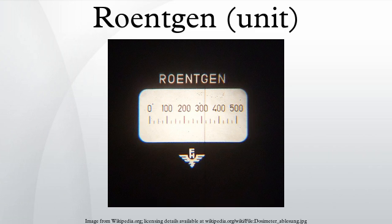In 1950, the ICRP reduced their recommended limit to 0.3 Röntgen per week for whole body exposure. The International Commission on Radiation Units and Measurements took over the definition of the Röntgen in 1950, defining it as the quantity of X or gamma radiation such that the associated corpuscular emission per 0.001293 gram of air produces, in air, ions carrying one electrostatic unit of quantity of electricity of either sign. The 3-MeV cap was no longer part of the definition, but the degraded usefulness of this unit at high beam energies was mentioned in the accompanying text.